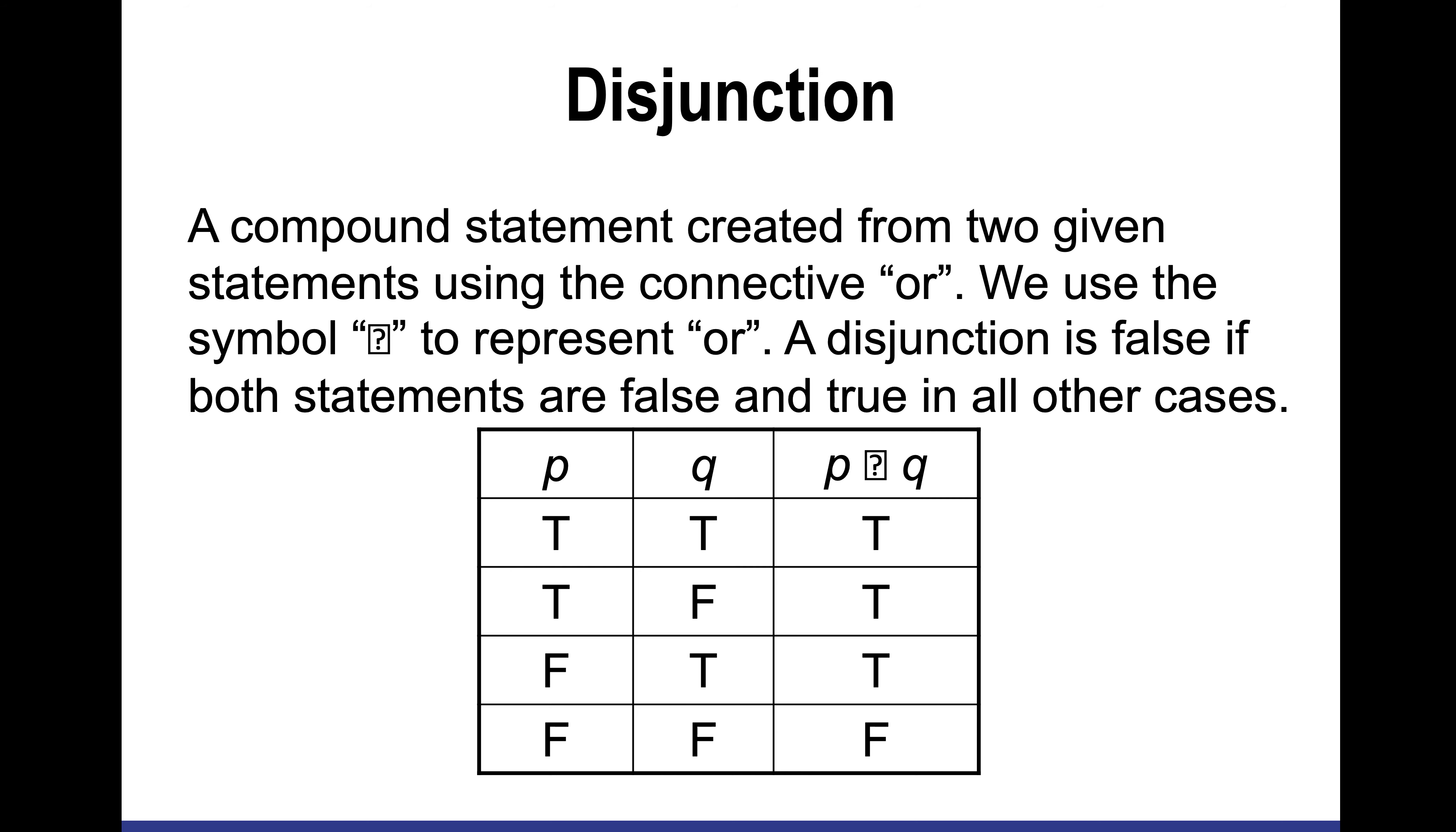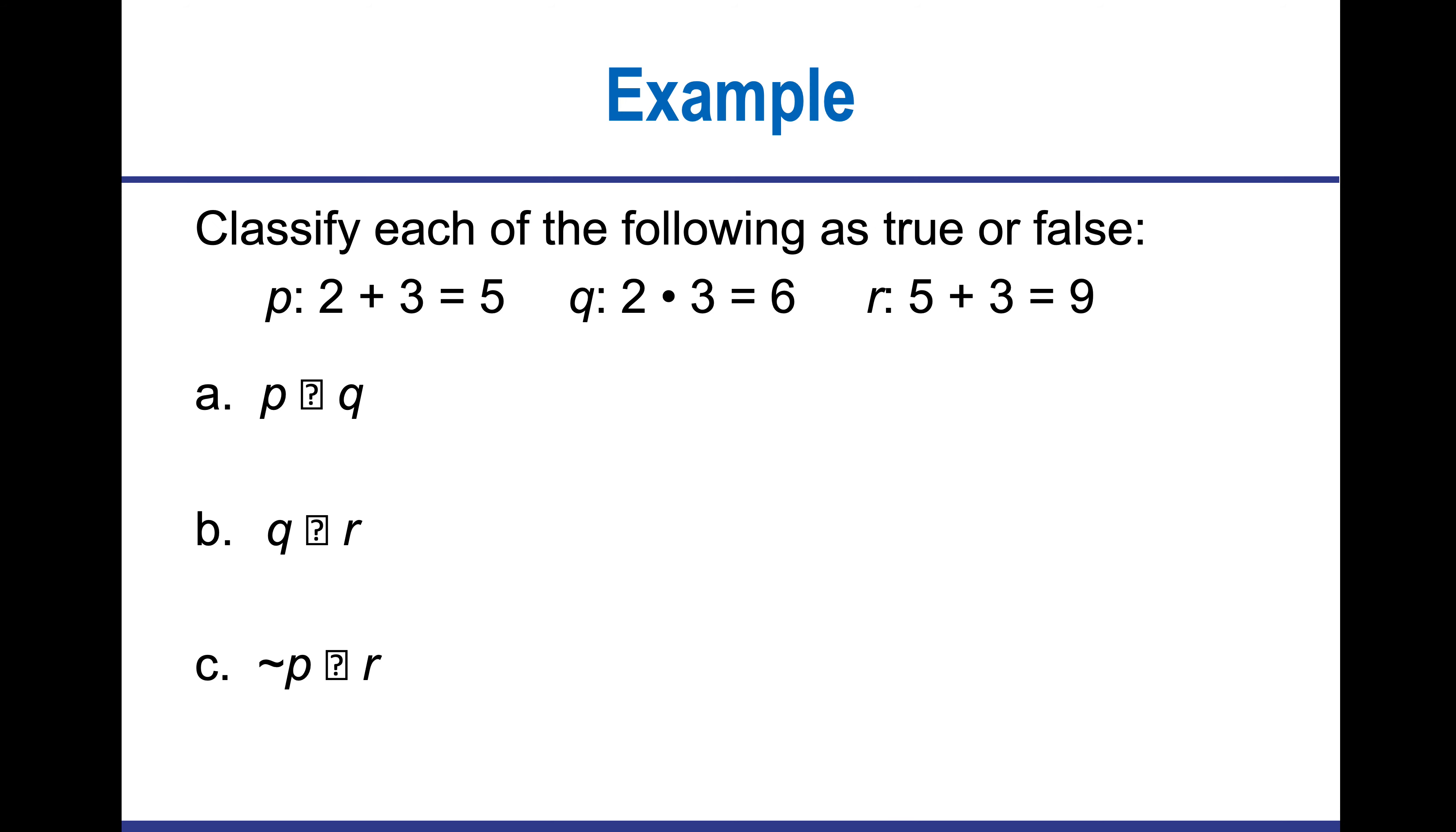A disjunction is a compound statement created from two given statements with the connective or. It could be true if they're both true or if only one of them is true. Here are some examples. P and Q. I would want to know if P and Q are both true. P is true because two plus three is five, Q is true, so P and Q is true.